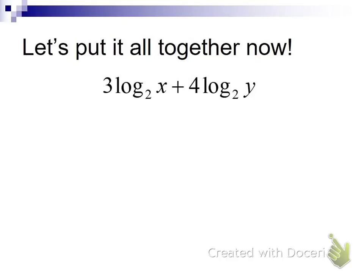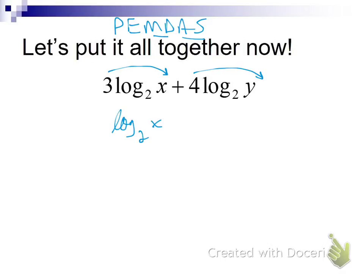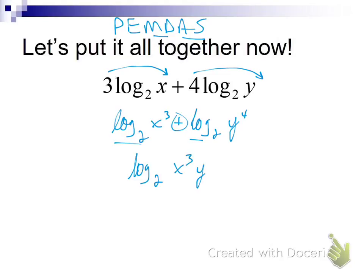Now we're going to put it all together. If we want to condense down to one logarithm, we do have to follow the order of operations — remember PEMDAS? PEMDAS says do inside the parentheses, then your exponents, then multiply, divide, add, subtract. No parentheses here, so I want to take care of my exponents — remember that coefficients are exponents, so we just bring them in. Then, two log bases are the same, so we do our addition and turn that into multiplication, getting log base 2 of x³ times y⁴.